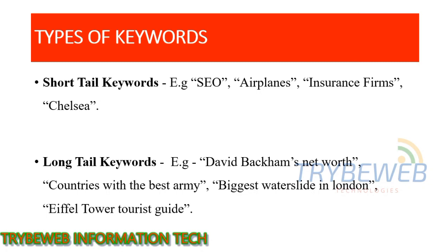Keywords are categorized into two types based on their length. Short tail keywords are really difficult to rank for and require lots of SEO — both off-page and on-page optimization. Examples include: SEO, Airplanes, Insurance firms, Chelsea. Long tail keywords are evergreen keywords with low difficulty compared to short tail keywords.